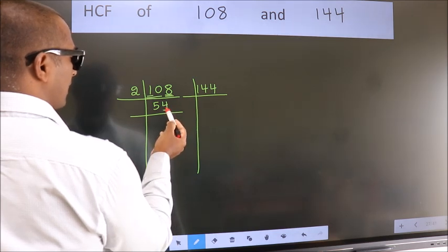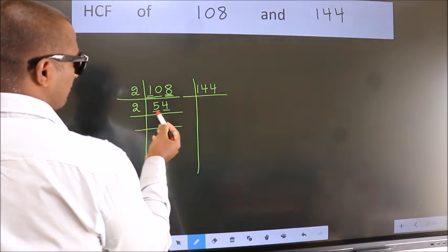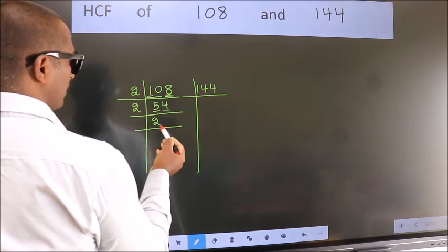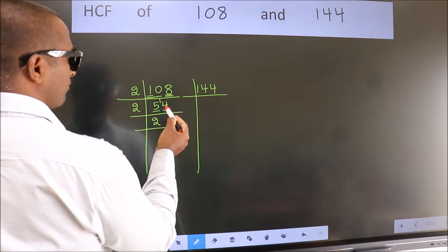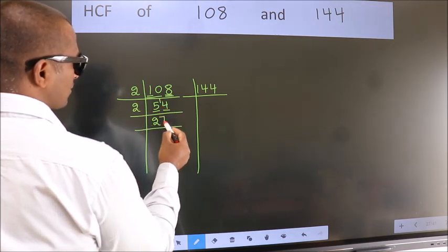Now, last digit 4, even number, so take 2. First number 5, a number close to 5 in 2 table is 2 times 2 is 4. 5 minus 4 is 1, 1 carried forward 14. When do we get 14 in 2 table? 2 times 7 is 14.